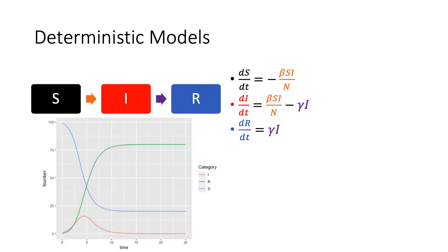Going over the basic deterministic model, the SIR model. We have our susceptible, infected, and recovered compartments. With the susceptibles shown in black, you can see this is the ODE system — the ordinary differential equations. Basically, what it's saying is that we're assuming continuous time and continuous population, and we're just looking at the change over time as we get smaller and smaller with our time steps.